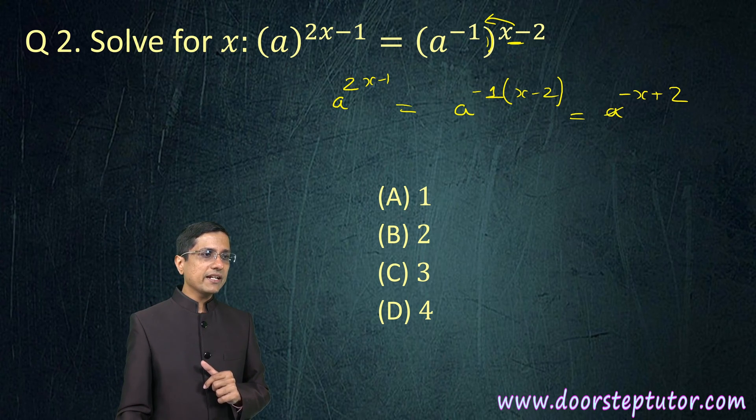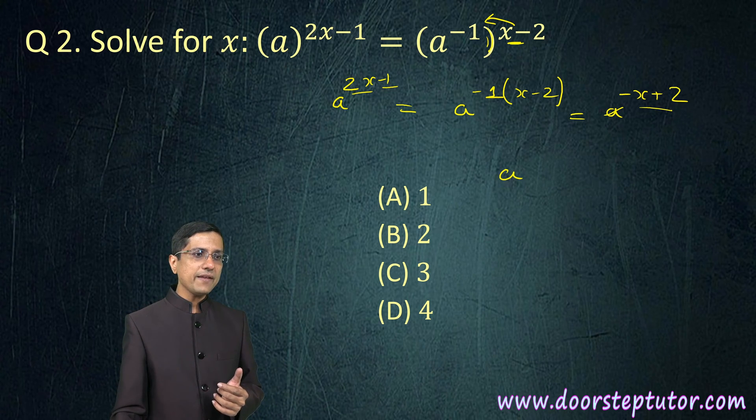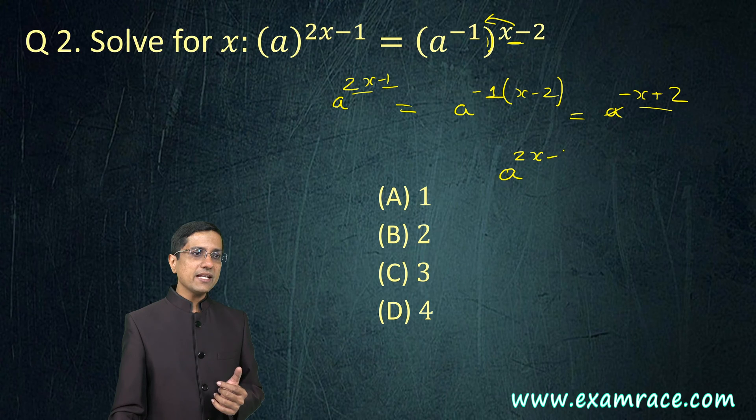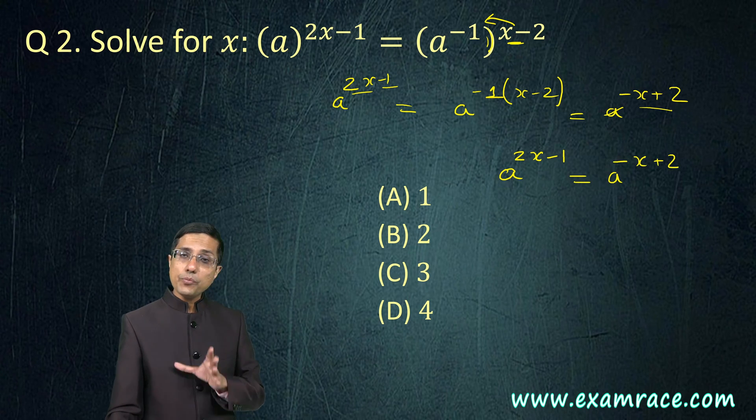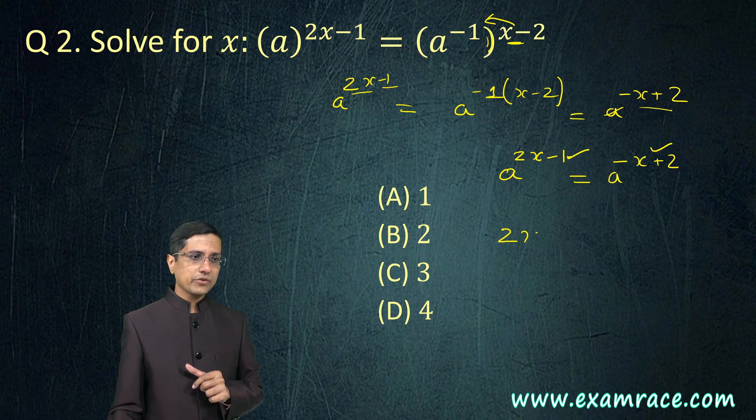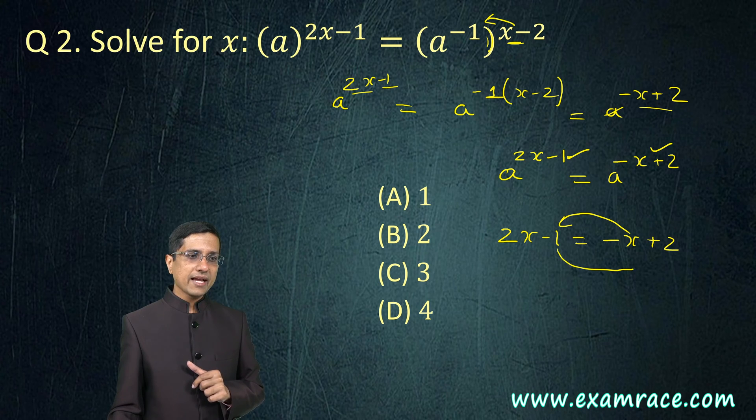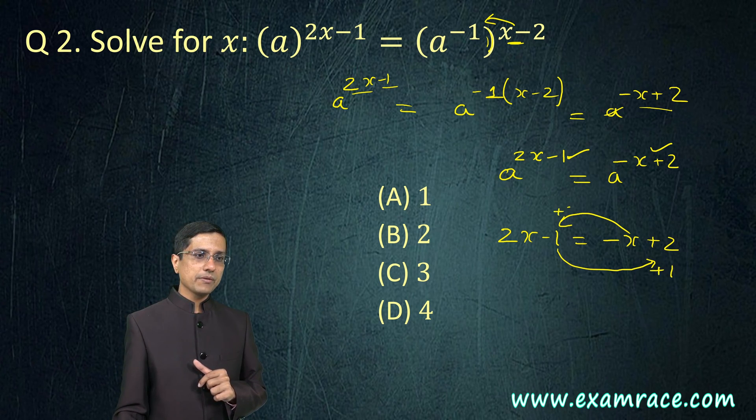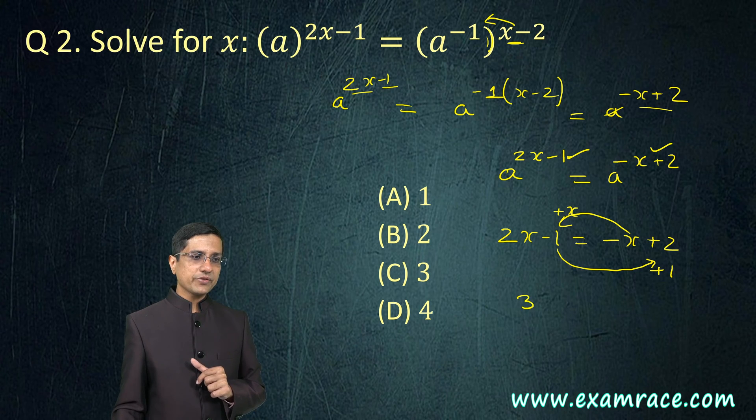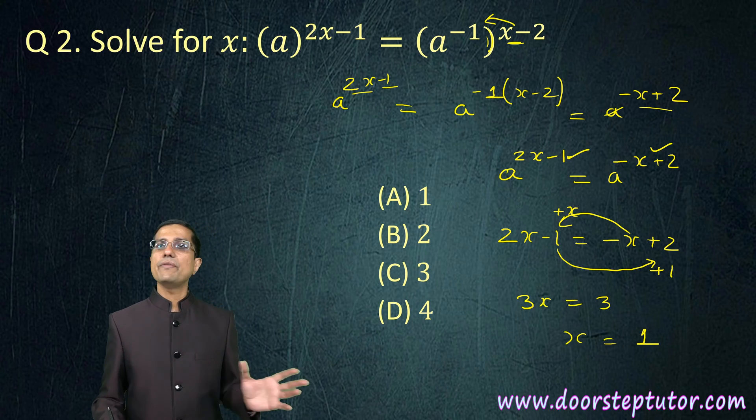Of course, both sides have A, so I can really compare the indices now. For A raised to power 2X minus 1 to be equal to A raised to power minus X plus 2, for them to be equal, 2X minus 1 has to be equal to minus X plus 2. This minus X would come on this side, it will become plus X and this minus 1 would go there and it will become plus 1. 2X plus X becomes 3X and this is equal to 2 plus 1, 3 and therefore X is equal to 1. Very very simple.